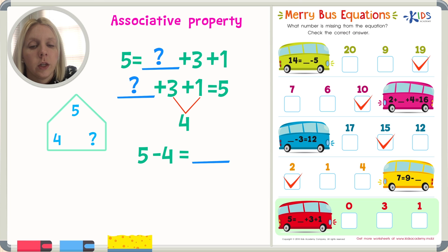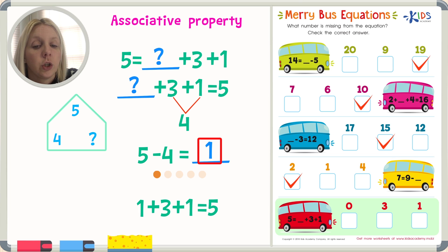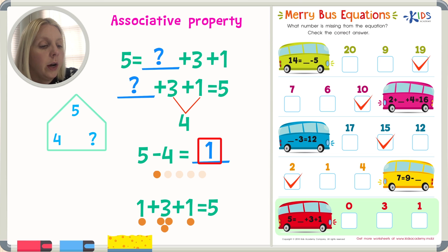You might already know the answer, but let's draw it out: five minus four leaves me with just one. So I think one is my answer. I'm going to check it by plugging it into the original problem: one plus three plus one equals five. That's one, two, three, four, five equals five. That is the correct answer, so I'm going to put a check next to the number one.